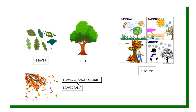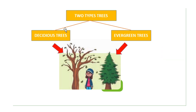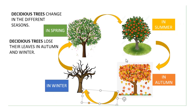Leaves change color during a season. Which one? In autumn! Trees become yellow, red, brown, and orange. There are two types of trees: deciduous trees and evergreen trees.